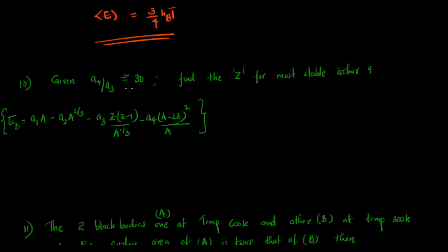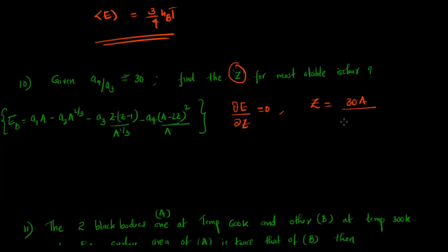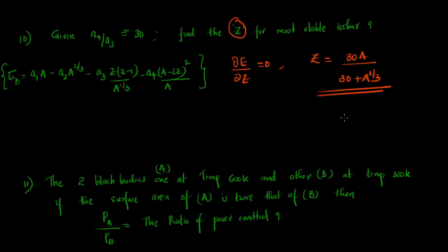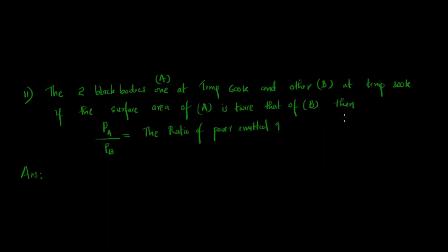A similar question appeared in a previous CSIR exam. This time it is from nuclear physics: given A4/A3 ≈ 30, we need to find the atomic number Z for the most stable isobar. Setting dE_B/dZ = 0, the answer comes out approximately as Z = 30A / (30 + A^(2/3)). If there is any mistake, please let me know in the comments.